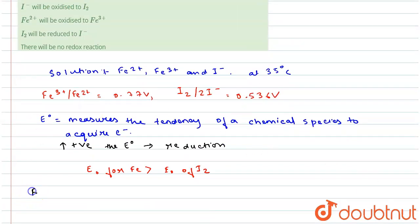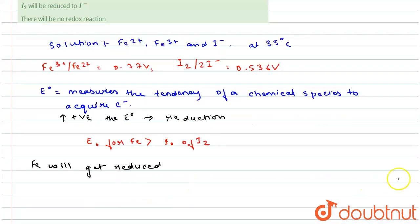Iron will get reduced because when they react in solution, the balanced chemical equation with changes indicating oxidation and reduction is shown below. This will be the redox reaction.